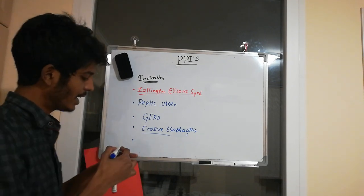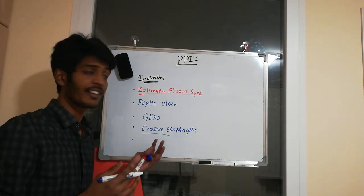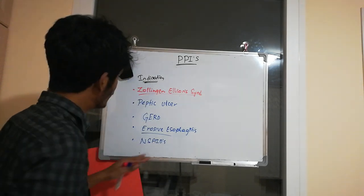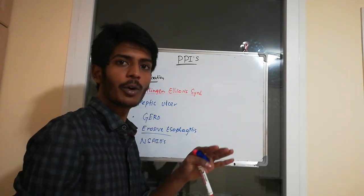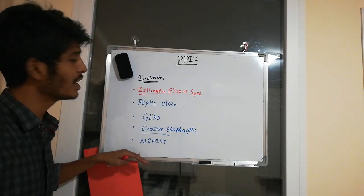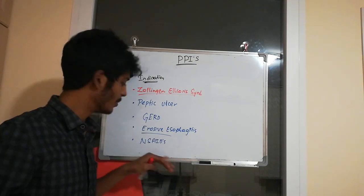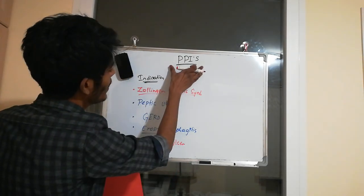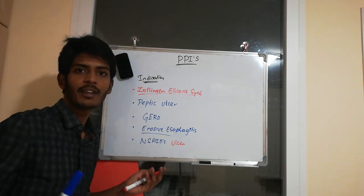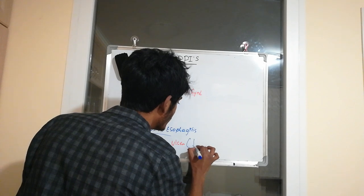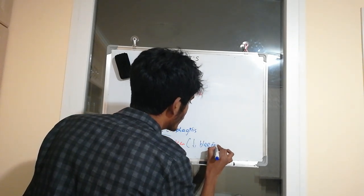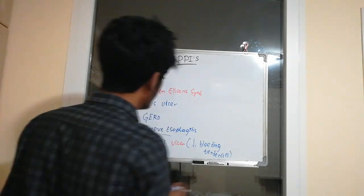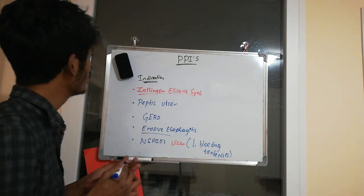Another important indication is NSAID-induced ulcers. NSAIDs are drugs that can induce peptic ulcer formation. PPIs are useful here because they also help decrease bleeding tendencies associated with these ulcers. These represent the main indications for proton pump inhibitors.